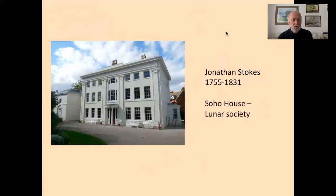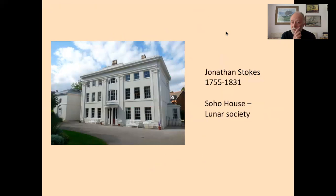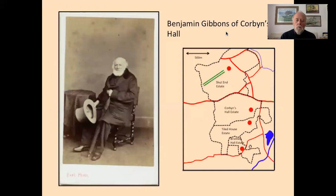Other landholders are perhaps surprising. Jonathan Stokes (1755–1831) was a member of the Lunar Society — I show their Soho House where they met. Not a major member, but he did very groundbreaking work on the analysis of digitalis and its effects on the human body — quite an eminent scientist. He had a doctor's practice in Stourbridge and acquired some of these lands in King Swinford.